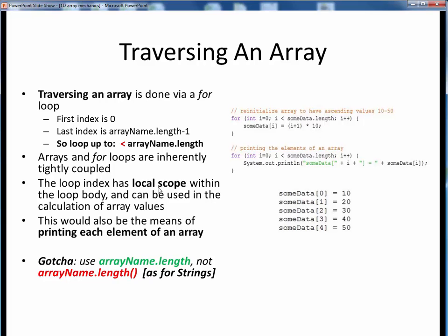Here, we're initializing all the array elements using this simple expression involving the loop index to count up by tens from ten. Also, the loop index has local scope within the for loop, so we can use it in any array calculations or display. So in this last example, we're simply traversing the entire array and printing out a label which incorporates the array element index, giving us this output display on the left, along with the actual array element value itself, giving us this output display on the right for the array initialized above. Be careful of this common gotcha when traversing an array.